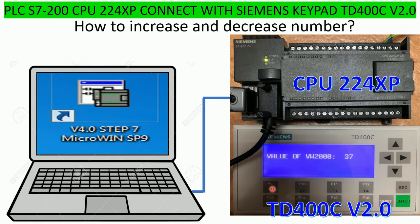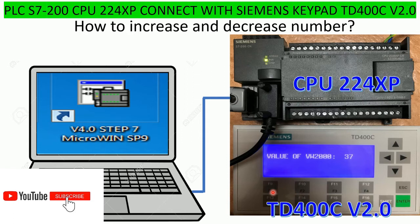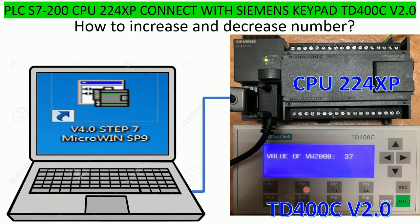Basically, if I press F1 it will increase the value of some memory — just an example for practice. We can use the memory that we want, for example a byte memory or a word memory. So when I press F1 it will increase the value, press F2 it will decrease the value, and if I want to reset I just press F3 to reset it to zero.